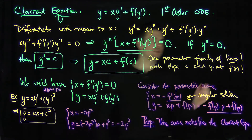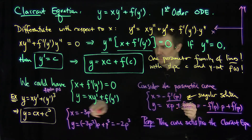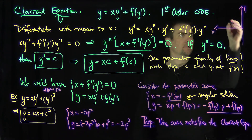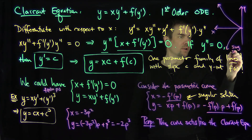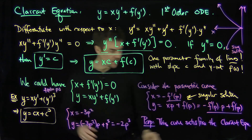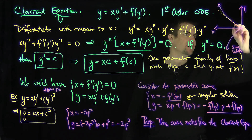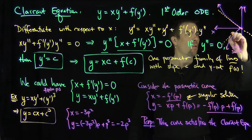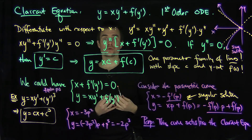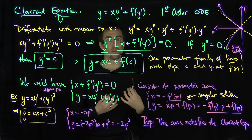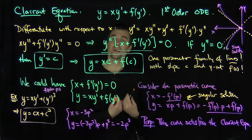If you were to plot this parametric curve, it forms the singular solution to this Clairaut equation. It turns out that all the lines in the one-parameter family are tangent to this curve — each line intersects the singular solution at exactly one point. The singular solution is the envelope of all those lines, giving a solution to the differential equation not contained in the one-parameter general solution. This is a very important example of a methodology used to construct singular solutions of certain classes of differential equations. Thank you very much.